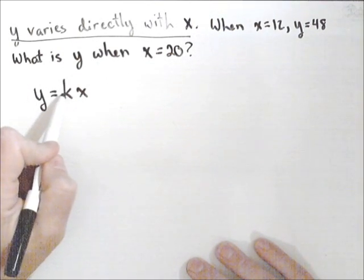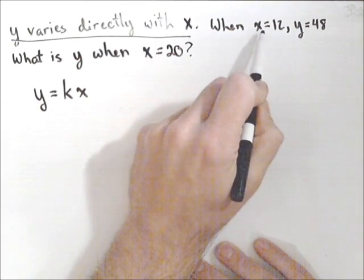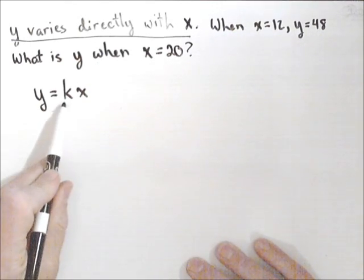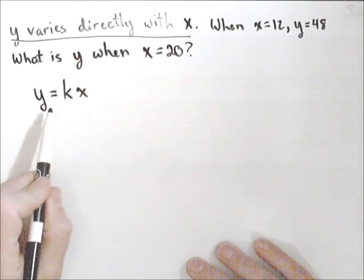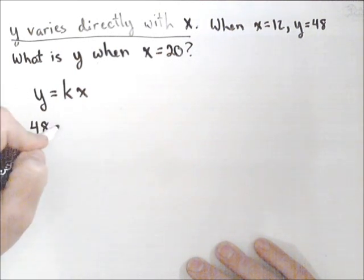It's going to always be the multiplicative relationship between x and y. Now the next part, when x equals 12, y equals 48. What that's going to do is allow us to find k, so we get the exact relationship, because this relationship must always exist between these two variables.